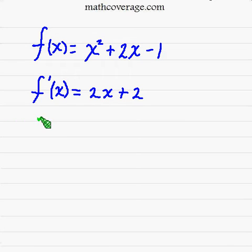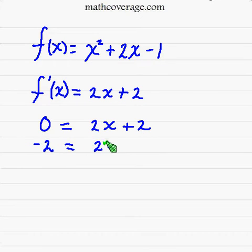Then what we want to do now is set this equal to 0 and simply solve for x. This is an easy one, so I'm going to take the 2 over to the left and then divide both sides by 2, and therefore x is equal to negative 1.